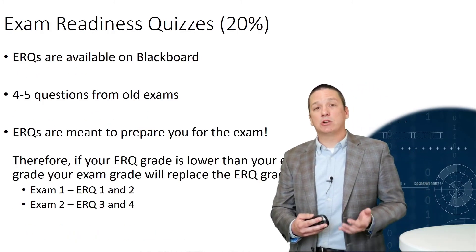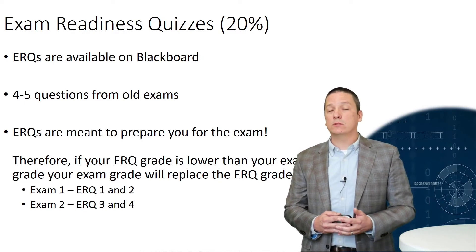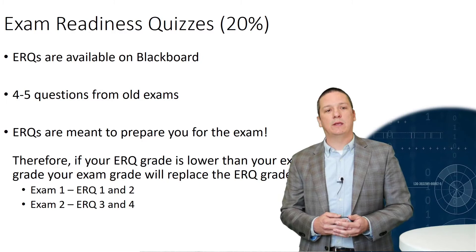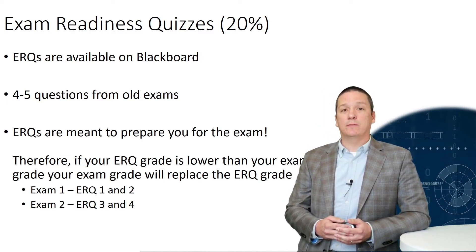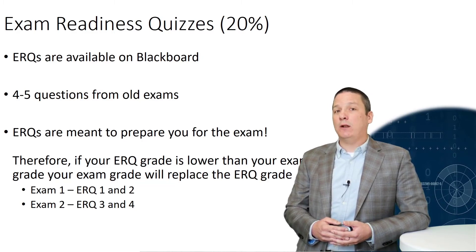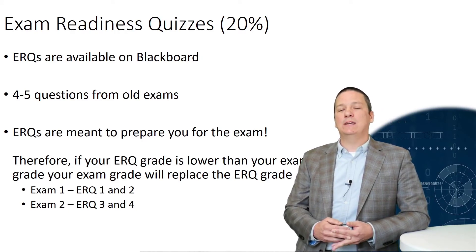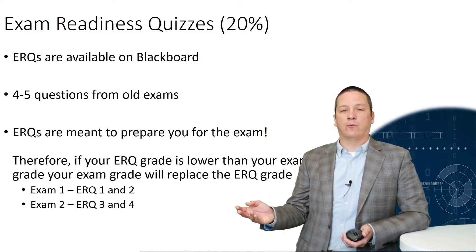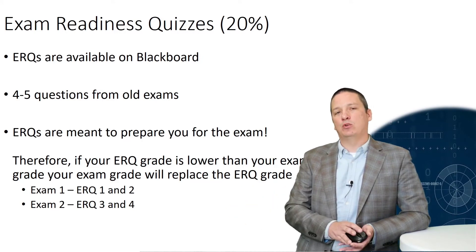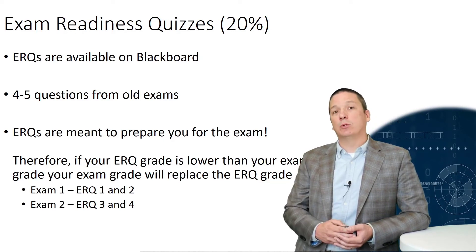Exams and assignments are pretty straightforward, but I did promise I'd tell you a little bit more about these exam readiness quizzes. These are already available to you on Blackboard, so you can take them as you get to that point in the material. They're made up of four or five questions from exams from previous semesters, which gives you the opportunity to understand what types of questions are going to be asked on the exam — good preparation for you. As these exam readiness quizzes, or ERQs, are meant to prepare you for the exam, if you do better on the exam than you do on the ERQ, then your exam grade will take the place of the ERQ grade. ERQs one and two prepare you for exam one, and three and four prepare you for exam two. So if you do better on exam one than on ERQ one and two, you can bring that grade up just a little bit.